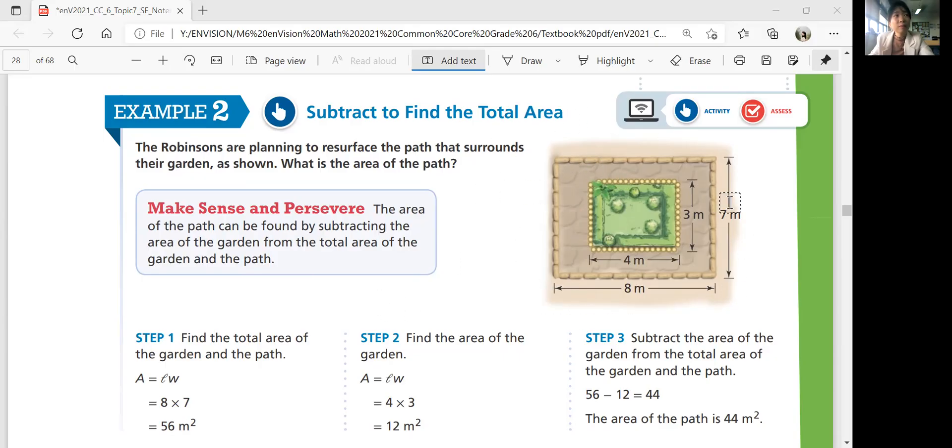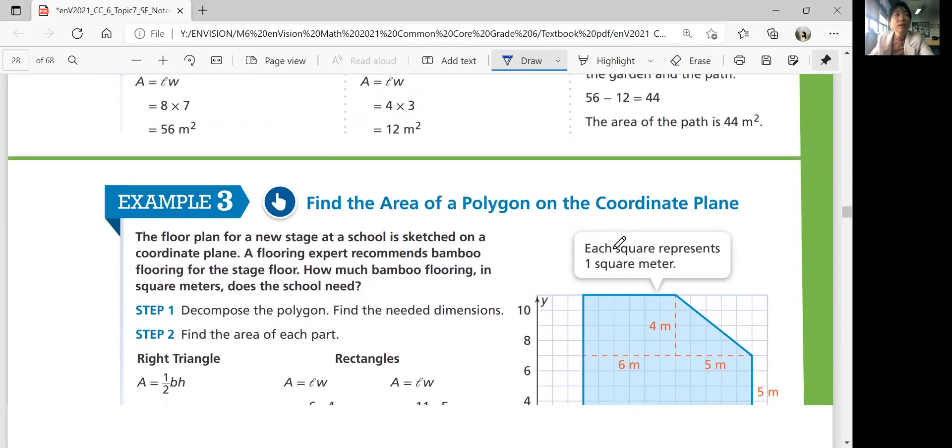So the total area of the garden, the path will be 8 times 7, which is 56. Now you're going to subtract the garden area, 4 times 3, 12 square meters. And then that leaves you 44 square meters. So that's the area of the path. But all together it's 56 square meters.